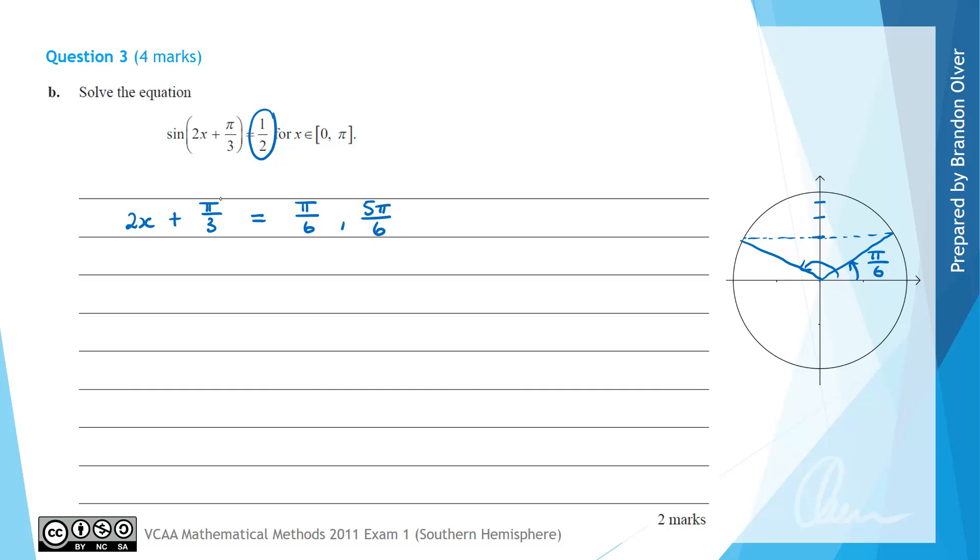Next we need to solve for x, so we're going to subtract 2 pi on 6 from all of the terms. On the left hand side we'll just have 2x is equal to pi on 6 subtract pi on 3, which is subtracting 2 pi on 6, giving us negative pi on 6. And then 5 pi on 6 subtract 2 pi on 6 is going to be 3 pi on 6.